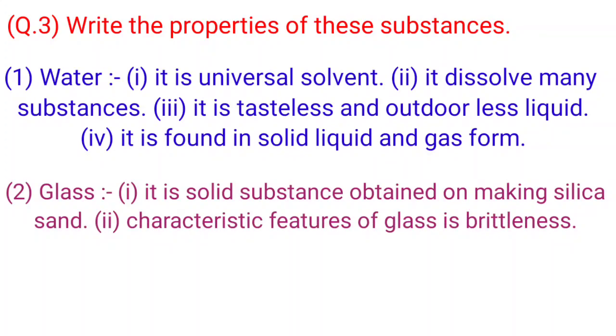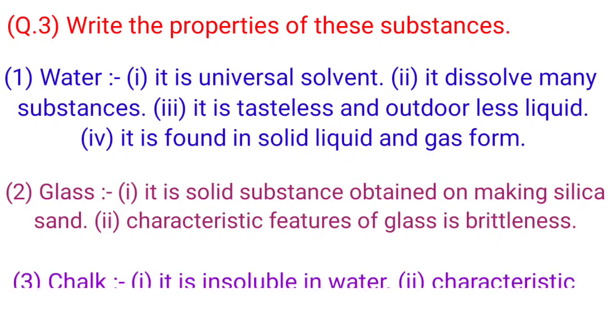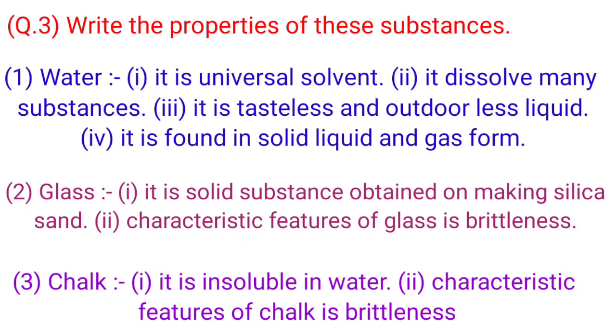2. Glass: It is solid substance obtained on making silica or sand. Characteristic feature of glass is brittleness. 3. Chalk: It is insoluble in water. Characteristic feature of chalk is brittleness.